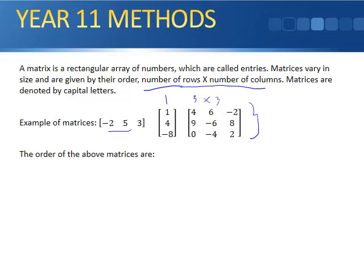So the order of the above matrices, the first one, number of rows, there's one row and three columns. For the second one, its order is this one. It has three rows and one column. And this one here has three rows and three columns. There's one, two, three rows there. And one, two, three columns there.